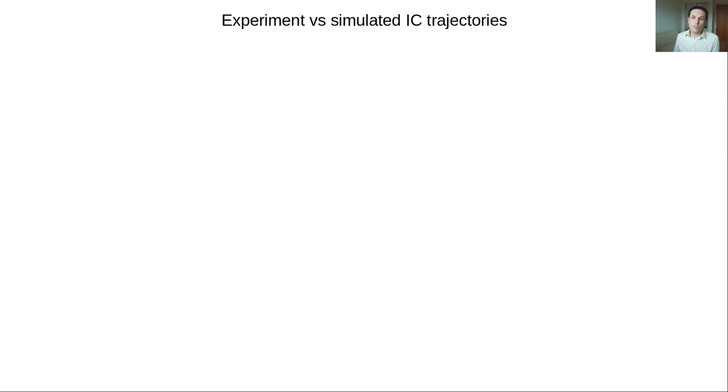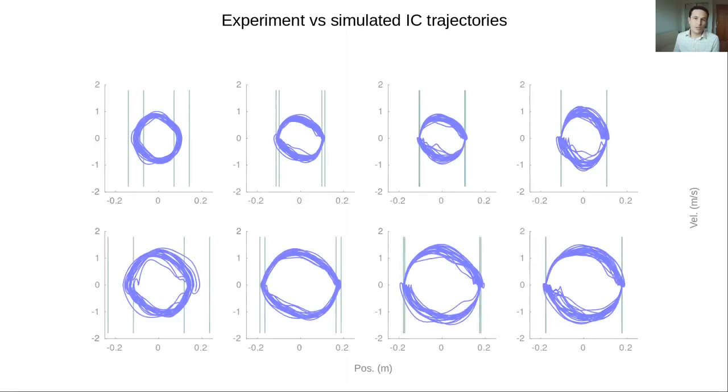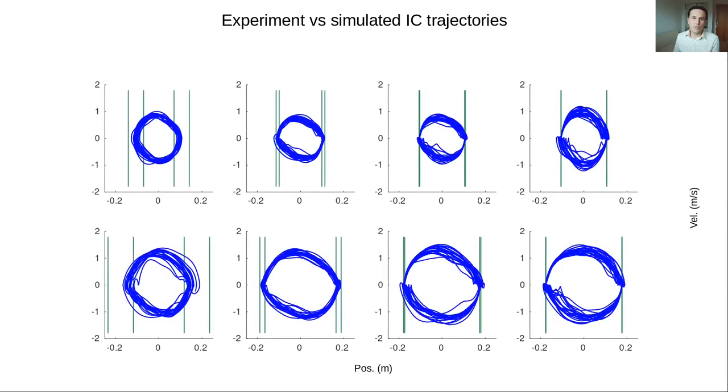Now, here's a similar comparison, but for a single participant in all the conditions of the experiment. As before, the experimental result is shown in blue. In this case, the difficulty of the task increases from left to right as the target regions get narrower and narrower, displayed as green vertical lines.